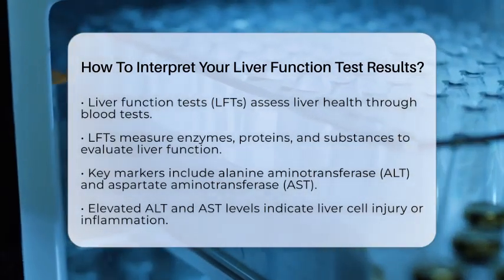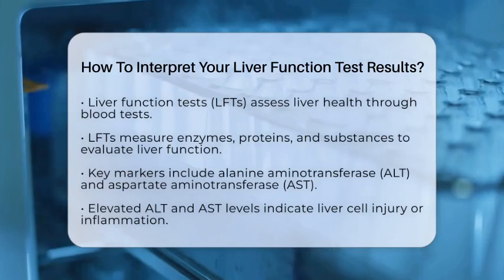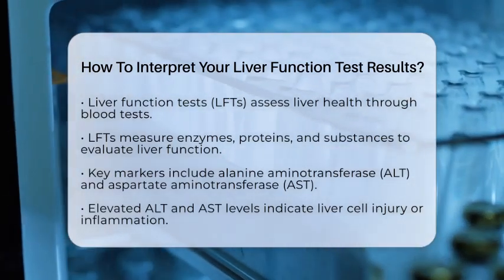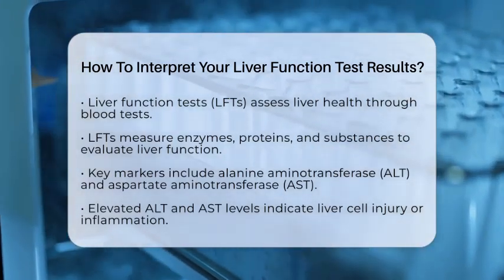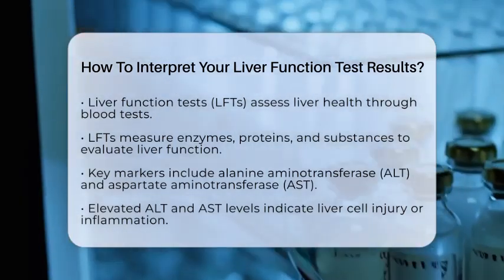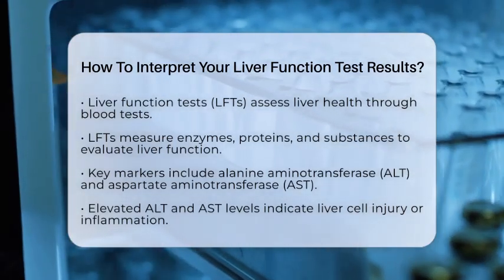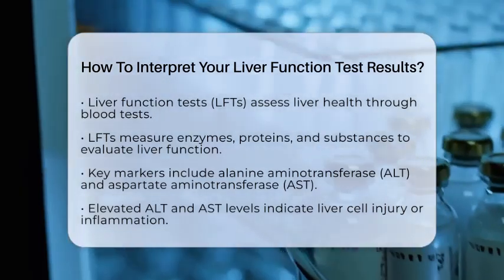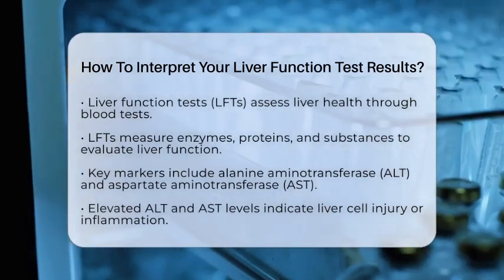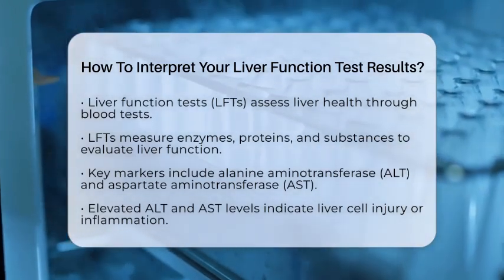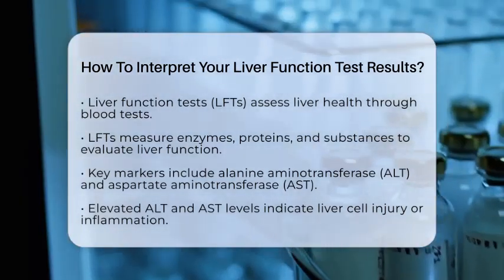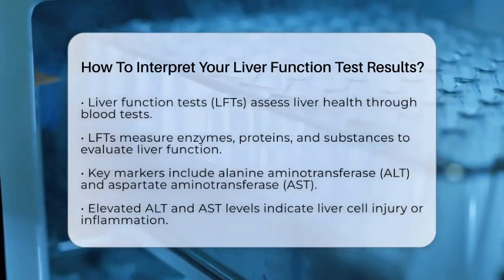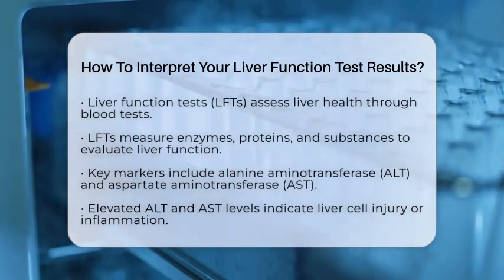Key components of LFTs include several important markers. Alanine Aminotransferase, or ALT, and Aspartate Aminotransferase, or AST, are enzymes primarily found in liver cells. If these levels are elevated, it often indicates liver cell injury or inflammation. ALT is more specific to the liver, while AST can also rise due to muscle damage.